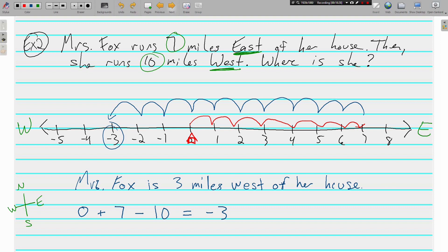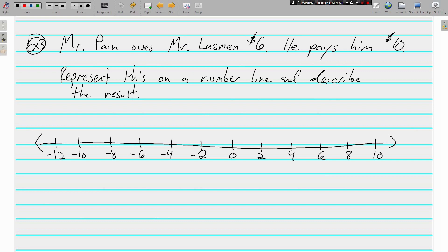Another example. One more for good measure. Here we've got Mr. Payne owes Mr. Lastman six dollars. He pays him ten dollars. Represent this on a number line and describe the result. Keywords, important information. The six and the ten dollars are going to be important. But we also have owes and pays that are going to help us figure out whether we should be moving left or right along this horizontal number line. Now starting out, Mr. Payne owes six dollars. So really I think if you owe money, that's a negative. Not only is it not good, but it represents money that you don't have.